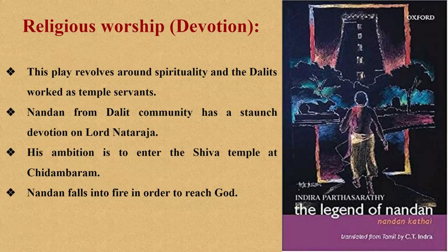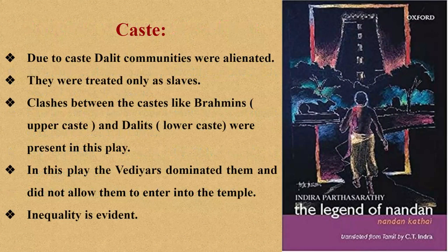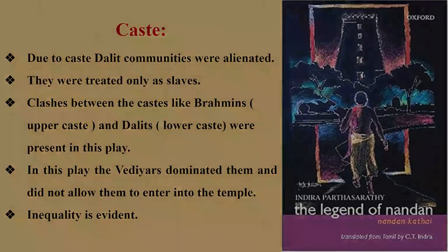The next theme is caste, a class structure determined by birth. Pulayars, Pallars, and Parayars are some of the large Dalit communities. In society, the Dalit communities were looked down upon by the upper caste; due to this the Dalits were alienated and treated only as slaves. In this play, clashes are present between Brahmins, considered the upper caste, and Dalits as the lower caste. The Vedas-dominated upper caste did not allow Dalits to enter into the temple, making the term inequality evident in this play.